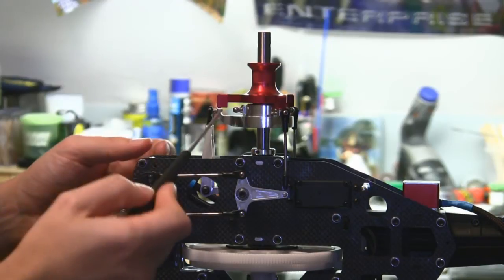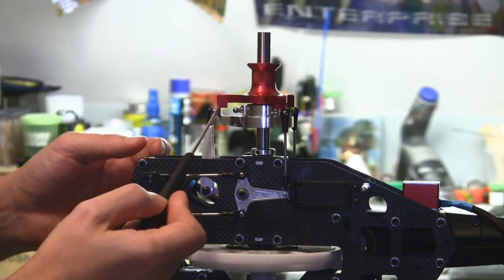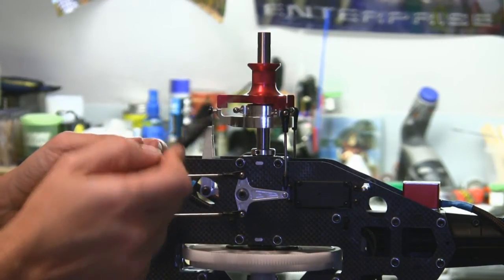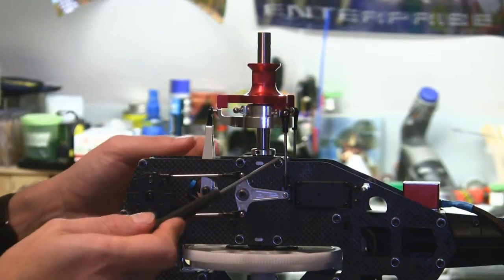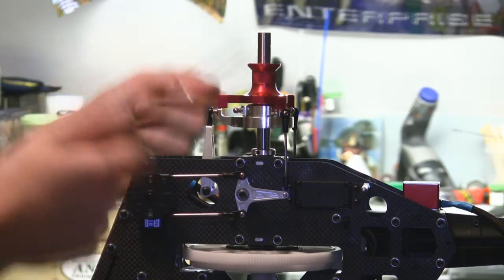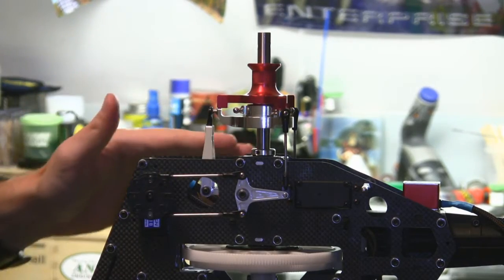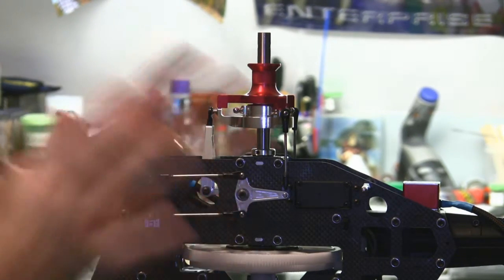And it gives you a real good indication on how level your swash is. Because these three points on the swash should match up and touch the three points on the leveling tool at the same time. If they don't, you may need to adjust one or two of the links just to get it exactly right. Once you have that set up, you have a mechanically perfectly set up helicopter.